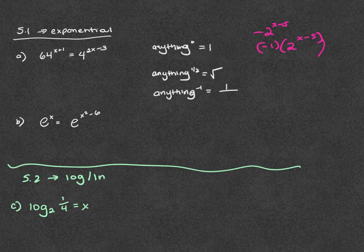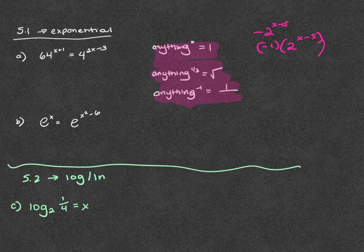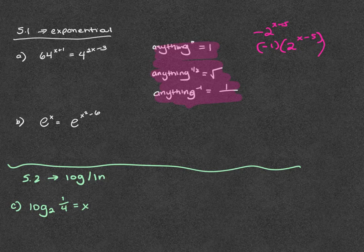Quick reminders: anything to the zero power is one; anything raised to the one-half is the same as the square root; anything to the negative one moves it to the bottom — it becomes one over whatever it is. If it was a fraction like three-fourths raised to a negative, you switch them.